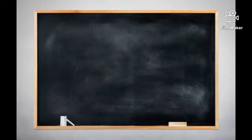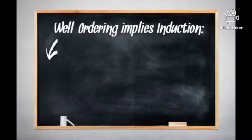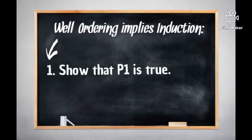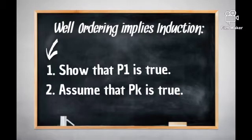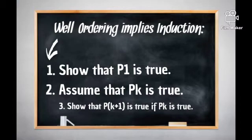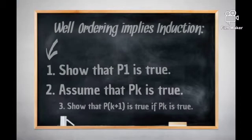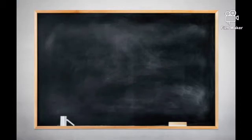There are three steps when well-ordering implies induction. First, show that P(1) is true. Second, assume that P(k) is true. And last, show that P(k+1) is true if P(k) is true.